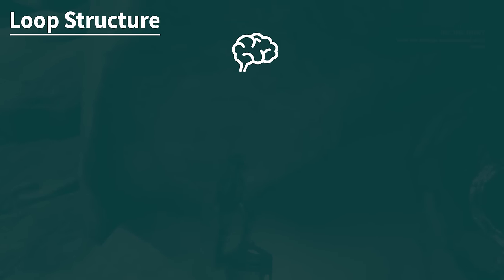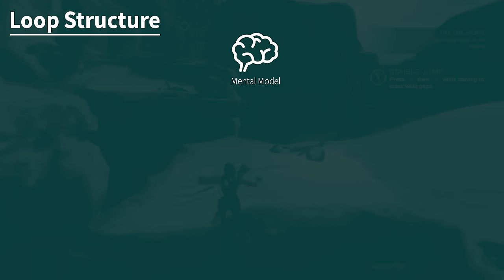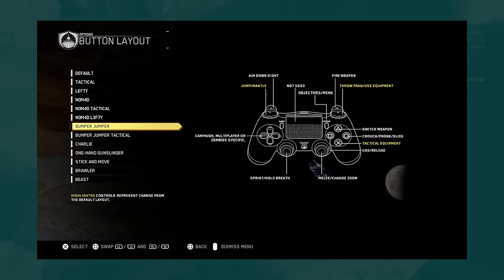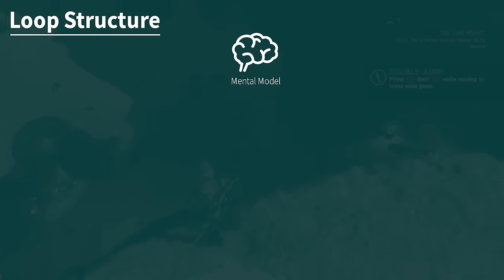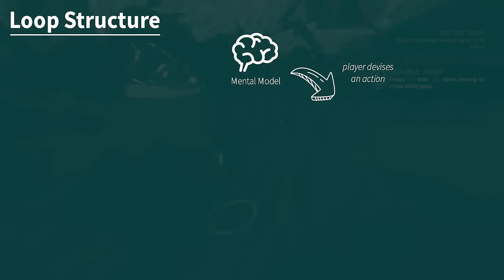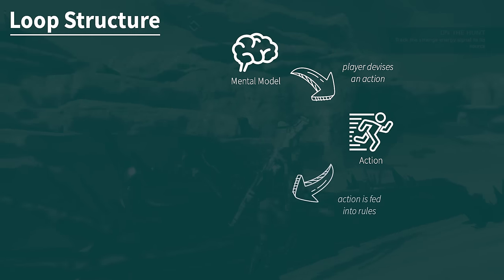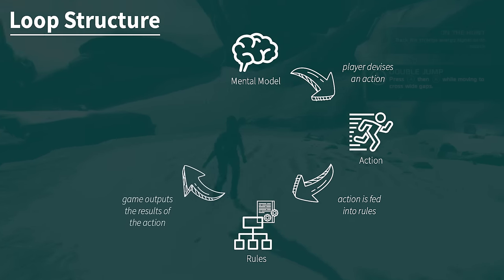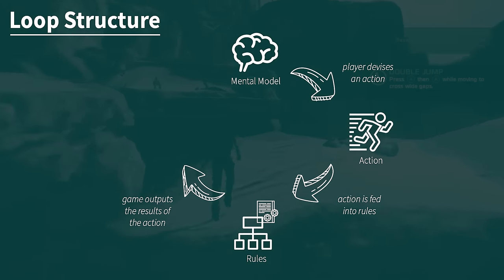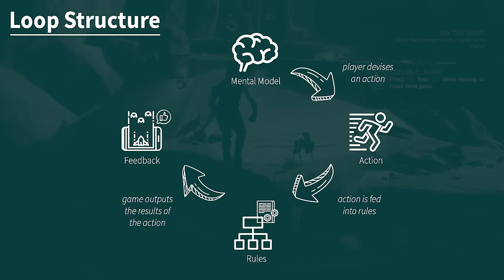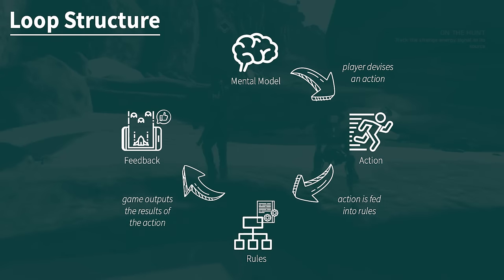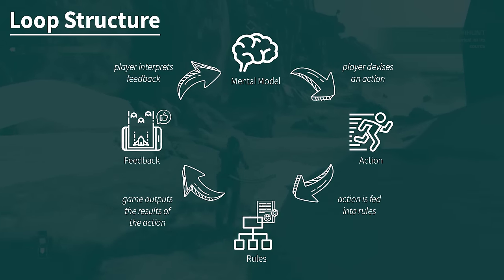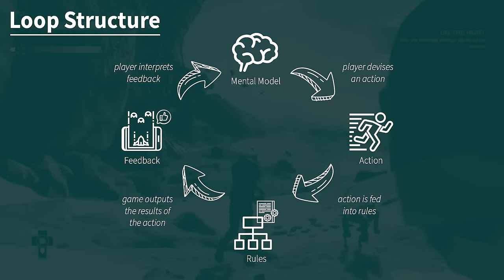We start at the top where we have a store of information the brain already has — this is called the mental model. At the start of a game this is likely going to be pretty empty, although it may have genre constants to draw upon, such as the fact that most first person shooters have very similar controls. The brain uses this information to devise an action and then acts. The action is received by the system and run through the rules — this is where the game reacts with an output. This output is fed back to the player as feedback. The player then receives this information, interprets it by referencing their current understanding, and tries to fit the new feedback into their mental model. The process then repeats.